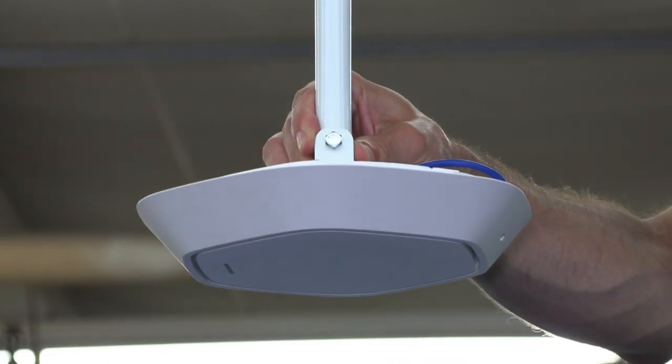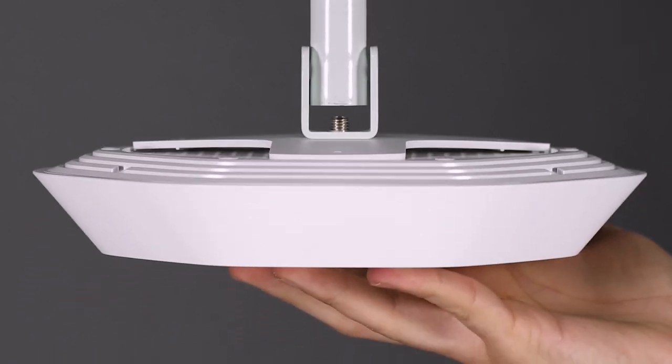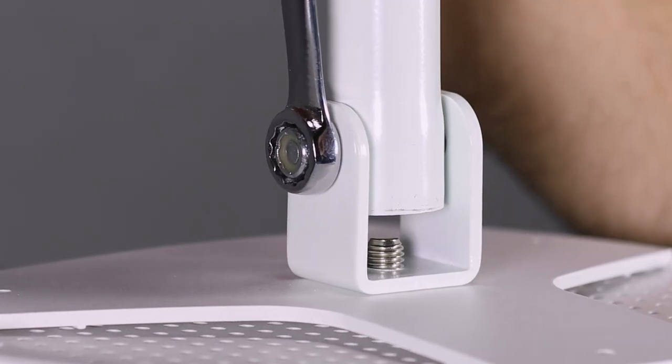For devices mounted with a single bolt, use the CPU. This simple U-bracket is easy to install and features a threaded M8 1.25 hole.